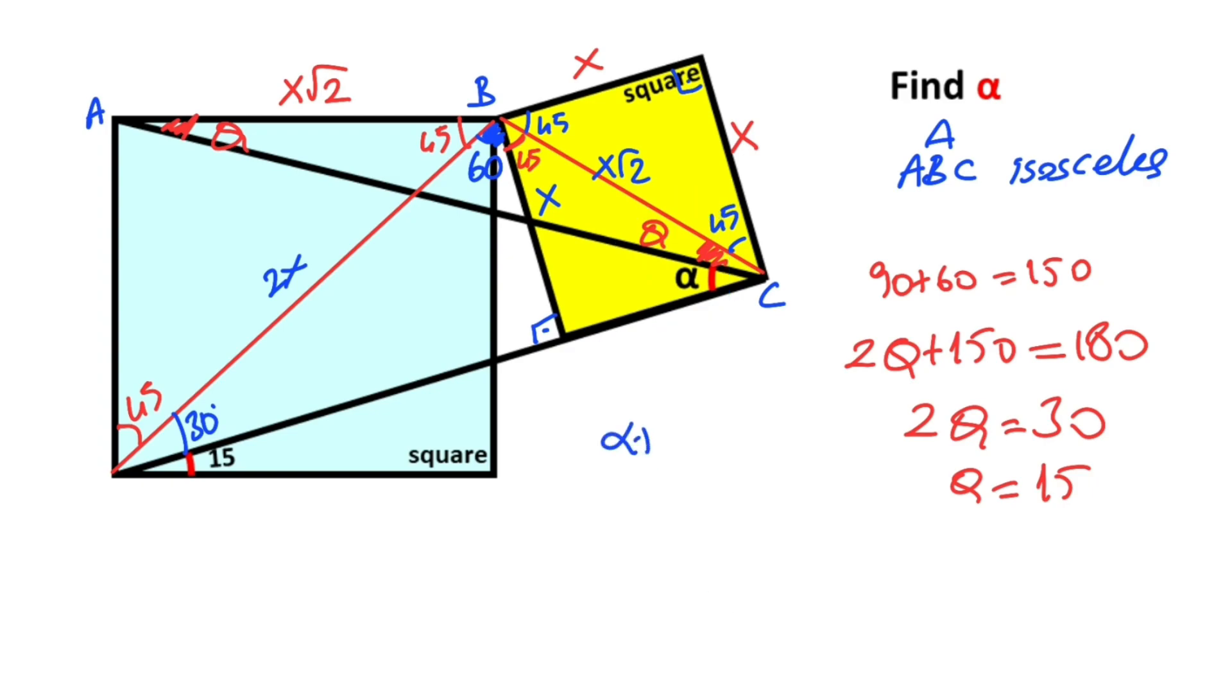And then we know that theta plus alpha equal 45 degrees. If theta is 15 degrees, then alpha is going to be 30 degrees.